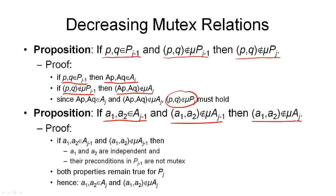If A1 and A2 are not mutex in action layer A_{J-1}, then by definition they must be independent and their preconditions cannot be mutex in P_{J-1}. Since mutual exclusivity between preconditions carries forward, the preconditions for the actions in the next layer must also not be mutex. And action independence is constant. So both properties remain true for the next proposition layer, and our two actions remain not mutually exclusive. This is a very important property: mutex relations are decreasing with increasing layer, both for propositions and for actions.